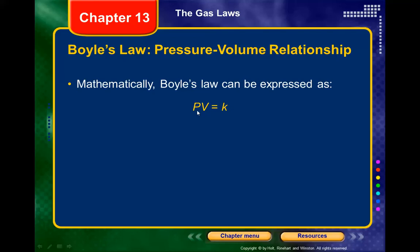A lot of students get this mixed up — because pressure and volume are multiplied together, they think it's a direct relationship. But it's actually inverse: pressure goes up, so volume has to go down to keep that product constant.